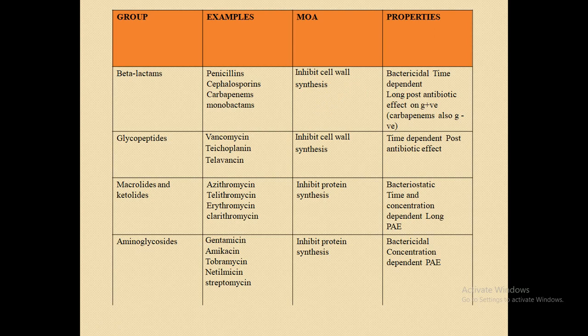Aminoglycosides are bactericidal agents — meaning they can kill the microorganism along with its spores — even though their mechanism is protein synthesis inhibition. They are concentration-dependent and have a post-antibiotic effect.